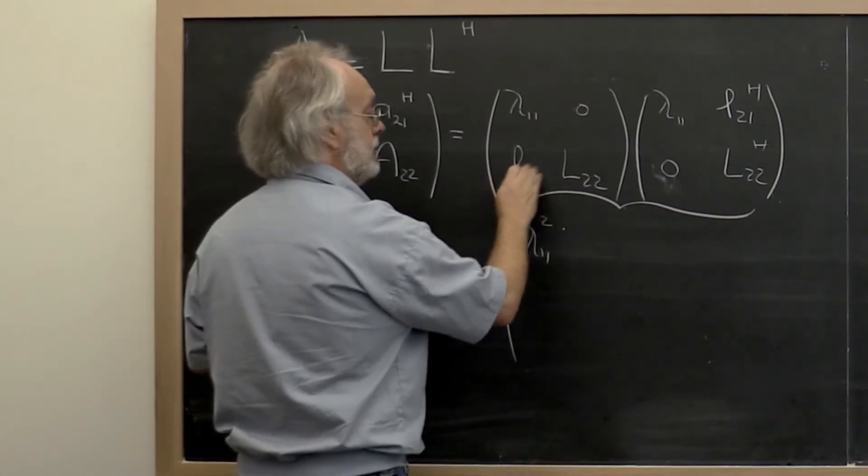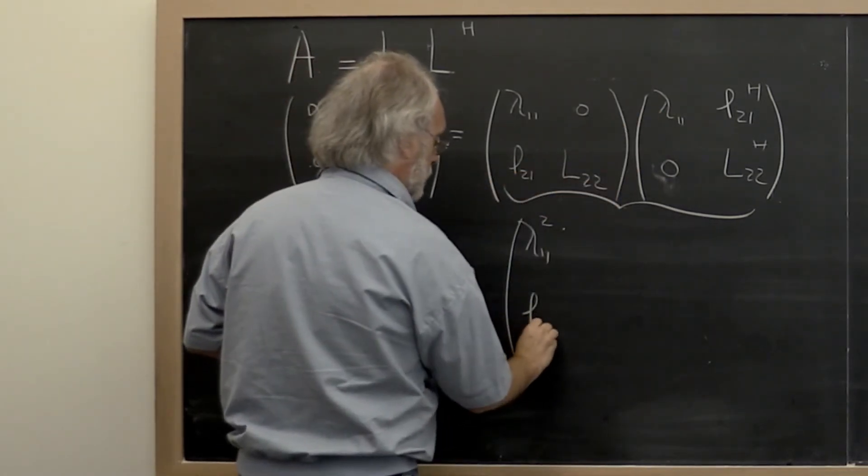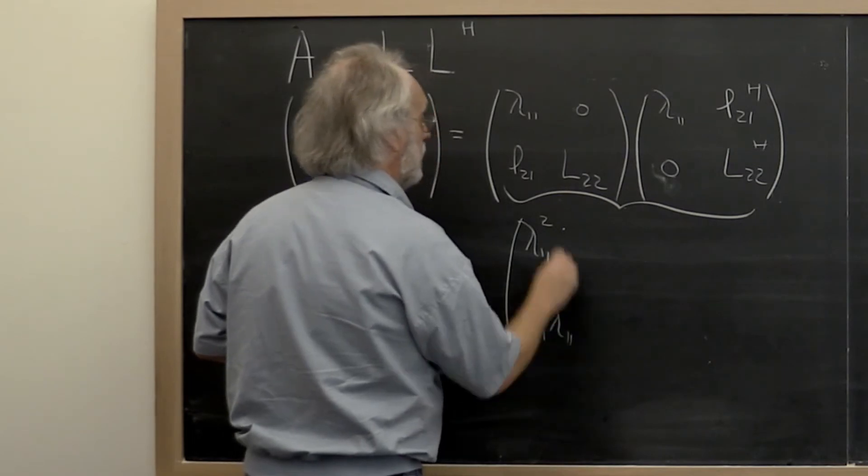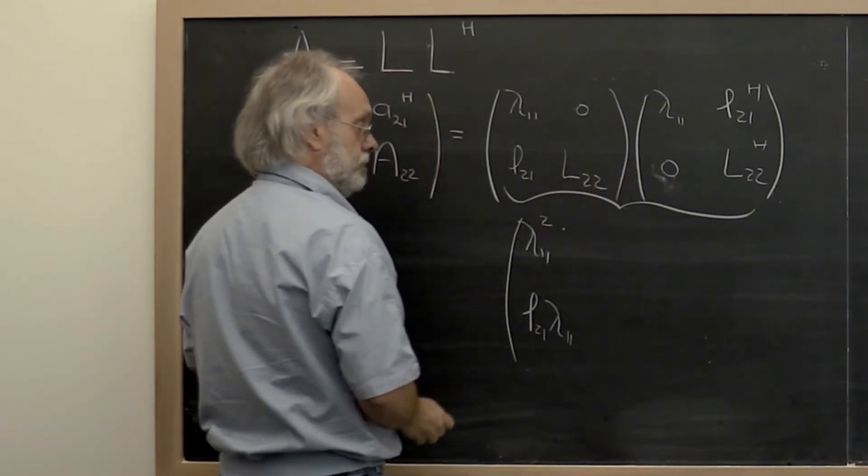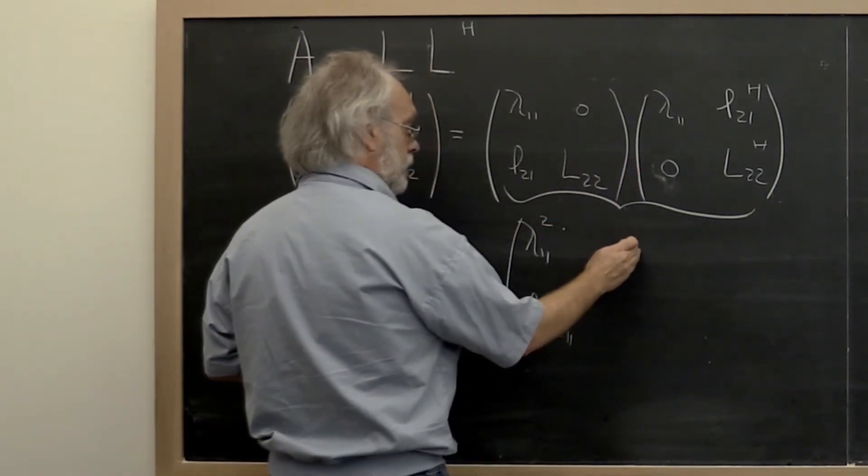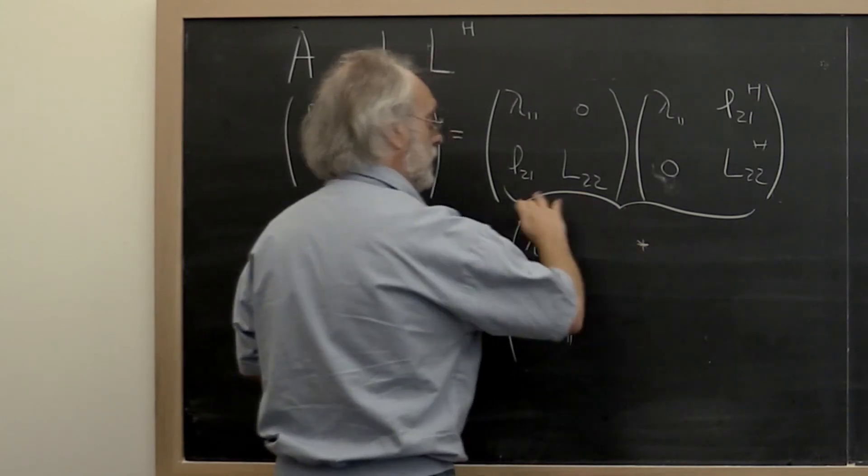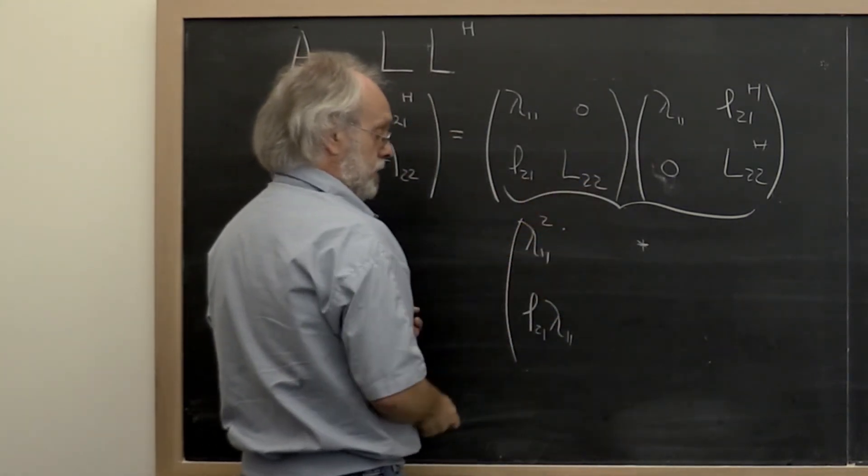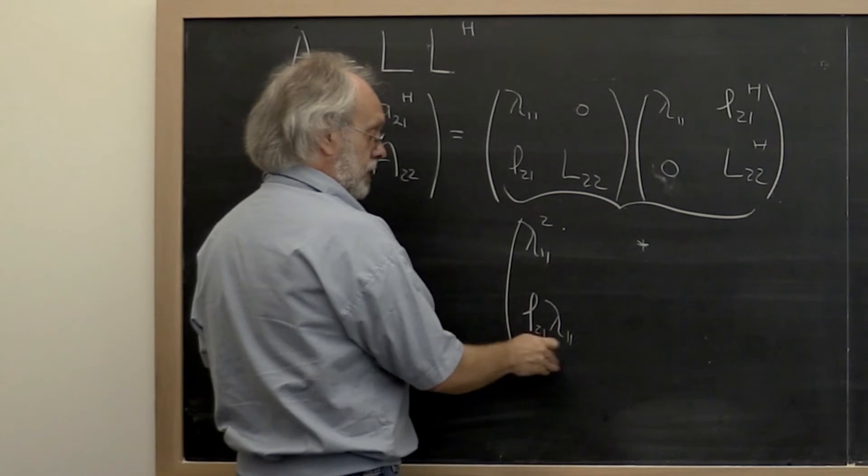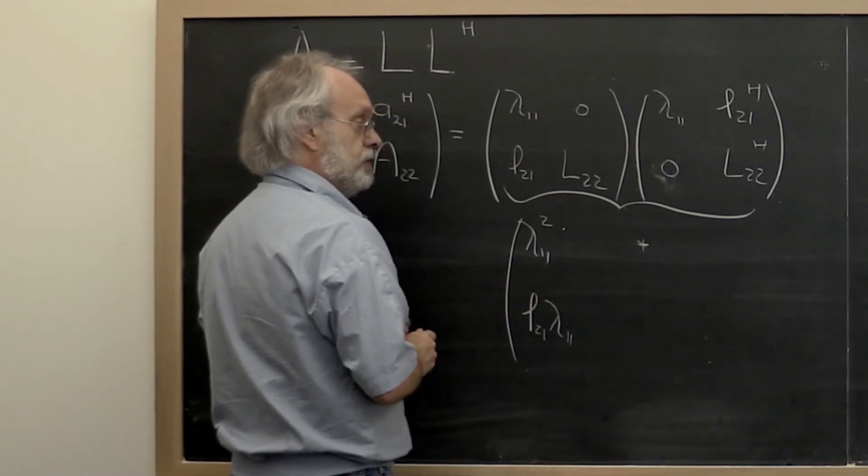And then below it we get this times that. So that gives us an L_2,1 times lambda_1,1 plus this times 0. This here we don't even need to bother with because we know that the result is Hermitian and therefore that should be the Hermitian transpose of this right here.